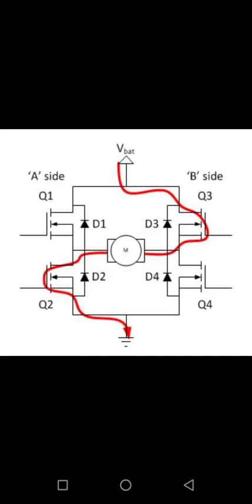If Q2 and Q3 are turned on, the reverse will happen. The motor gets energized in the reverse direction and the shaft will start spinning backwards.